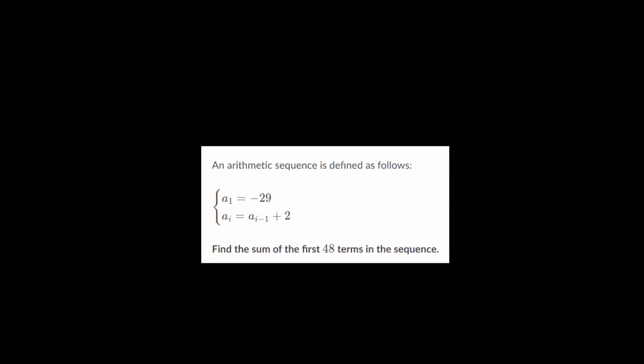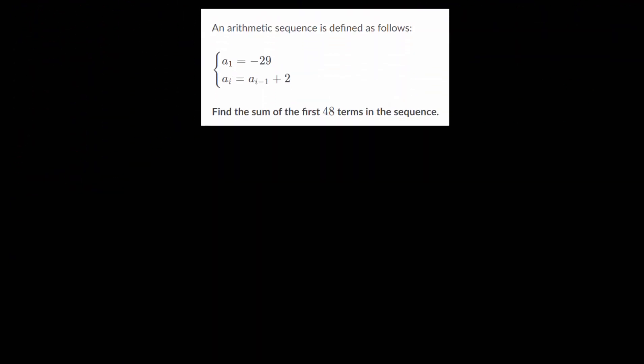And let's try another problem. This one's going to look a little bit different since this sequence is defined recursively, and we need to sum the first 48 terms in the sequence. So we know there are 48 terms in the sum. So we'll have S sub 48. And we also know the first term is minus 29. And it looks like to find the ith term, we'll take the term before that and then add 2. So this 2 here is our common difference, D.